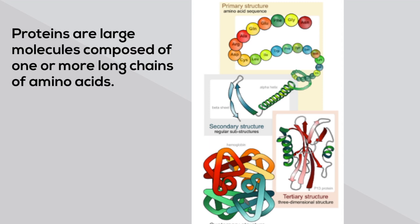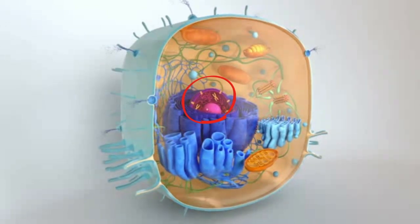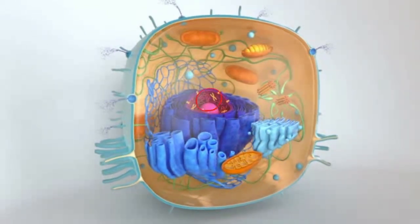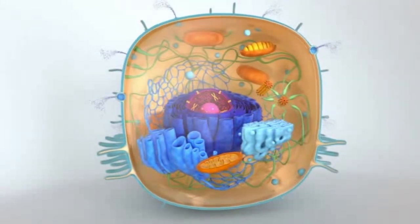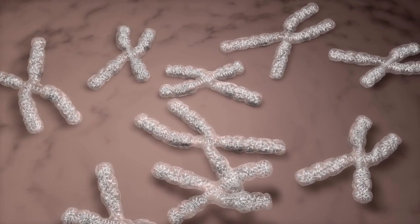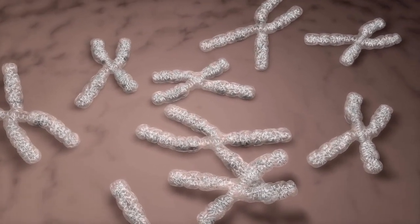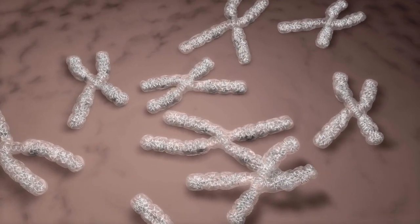Protein synthesis begins in the nucleus. DNA is found in the nucleus and in humans it is split among 23 chromosomes. A section of DNA that contains the blueprint for a protein is called a gene.